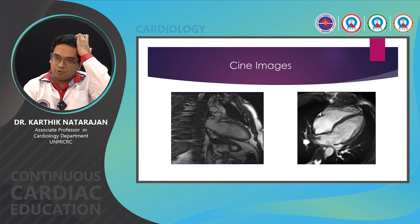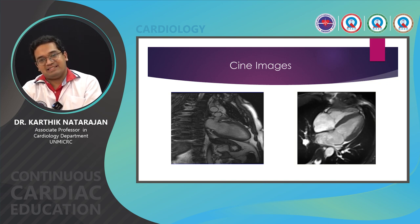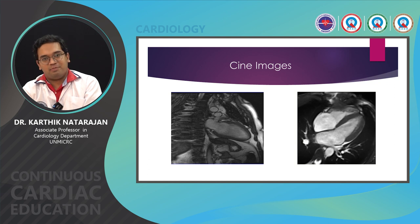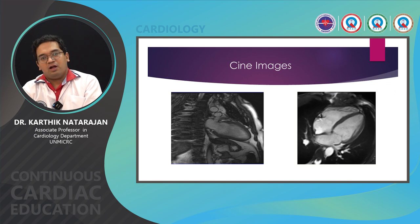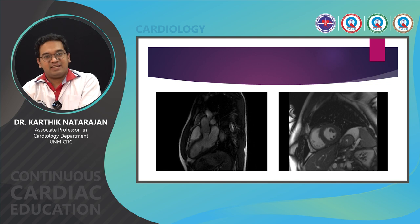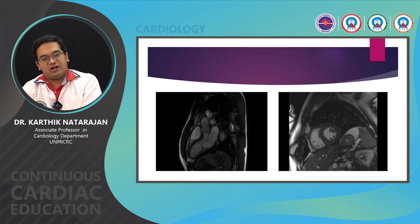Cine images are typically gradient echo sequences and are very fast. SSFP — steady state free precession — provides excellent temporal and spatial resolution but requires more breath-holds. If you want faster imaging, you may use a spoiled gradient echo. You take a stack of short-axis cine images, predominantly for LV function assessment and LV volume assessment.